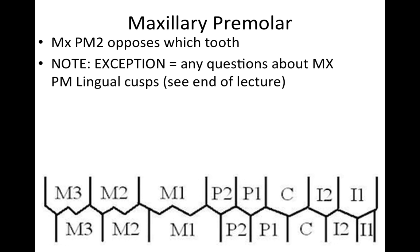For maxillary posterior teeth, here are two questions. The buccal cusps of the maxillary posterior teeth oppose which anatomical items of which teeth? The answer is they're going to oppose grooves and embrasures — specifically buccal grooves, not central grooves. Here we're opposing some buccal grooves, and over here we're opposing an embrasure and then some buccal grooves.